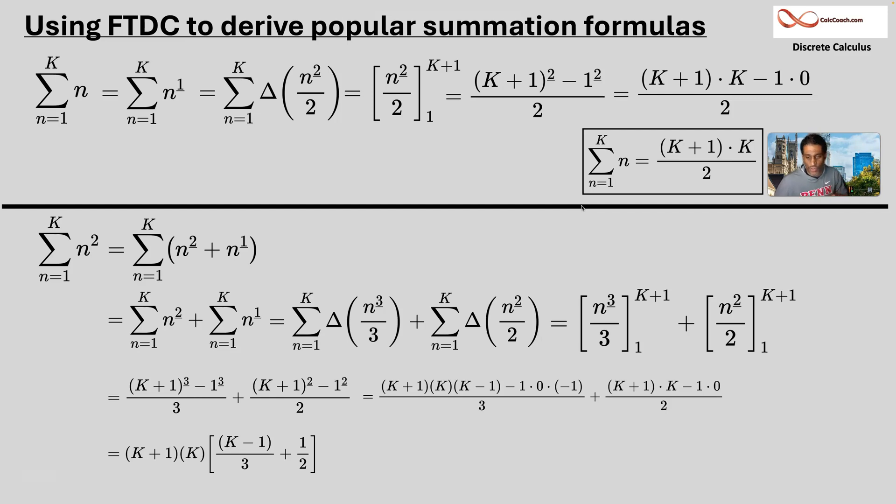In the first term, we're left with the k minus one over three. Second term, just one and it's over two.